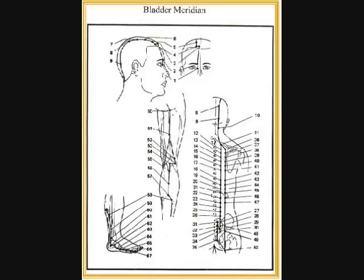UB54: pain in the lumbosacral region, muscular atrophy, motor impairment of the lower extremities, dysuria, swelling around the external genitalia, hemorrhoids and constipation. UB55: lower back pain and paralysis of the lower extremities. UB56: spasm of the gastrocnemius muscle, hemorrhoids, acute lower back pain. UB57: lower back pain, spasm of the gastrocnemius, hemorrhoids, constipation, beriberi.